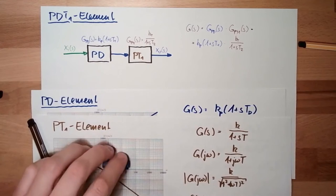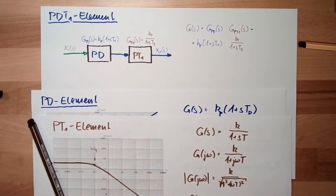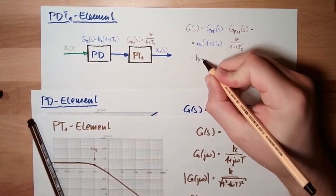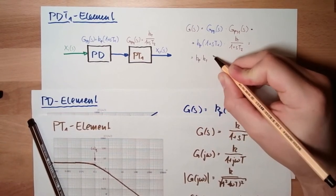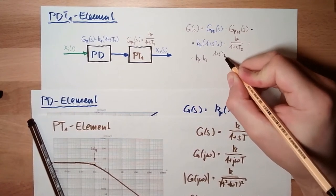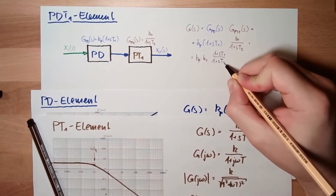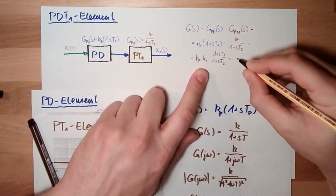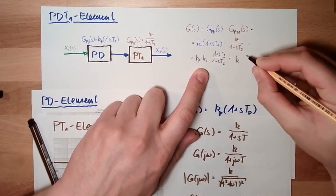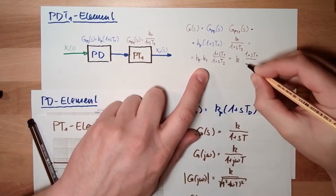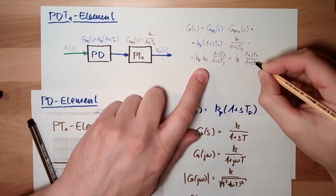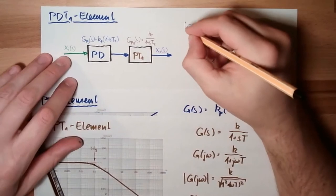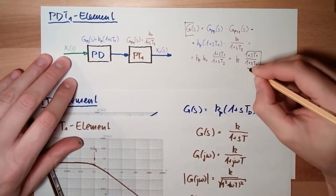I will write them a little differently, just in another order: K_p multiplied by K_T times (1 plus S·T1) divided by (1 plus S·T2). And since these two constants are multiplied together, I will just call them K: K·(1 plus S·T1) divided by (1 plus S·T2). And this is the transfer function of the PDT1 element.